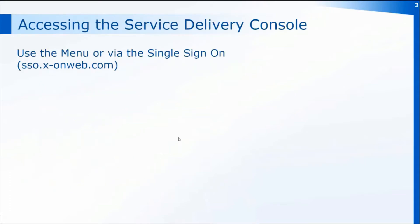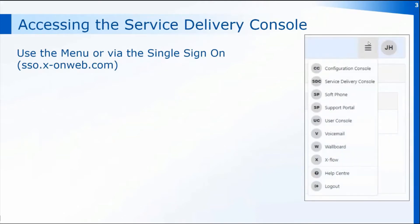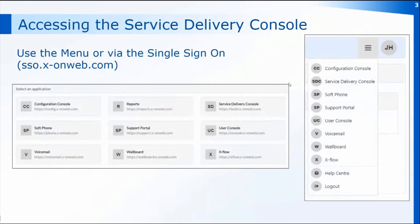To access the service delivery console, you can either go via the menu — the three lines just next to your initials at the top right-hand corner of any of the consoles once you've logged in — or you can go directly through the single sign-on page once you've logged in and select the service delivery console from there.